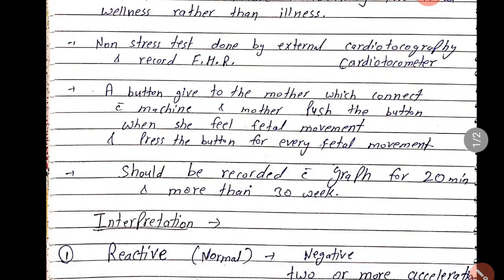In this procedure, a button is given to the mother which is connected to the machine. The mother pushes the button whenever she feels fetal movement. The CTG machine has two transducers along with a button that is attached and given to the mother's hand. The mother is instructed to push the button each time she feels fetal movement.